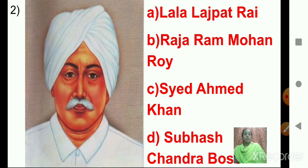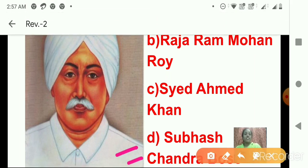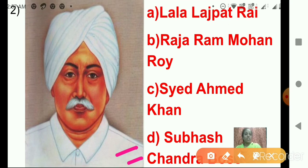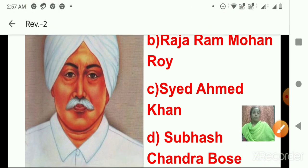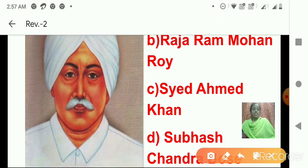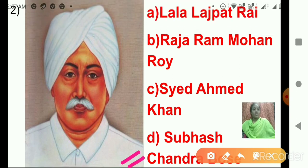Tell me — whose image is this? Let's read the options first. A: Lala Lajpat Rai. B: Raja Ram Mohan Roy. C: Syed Ahmed Khan. D: Subhash Chandra Bose. This image is of Lala Lajpat Rai — option A.